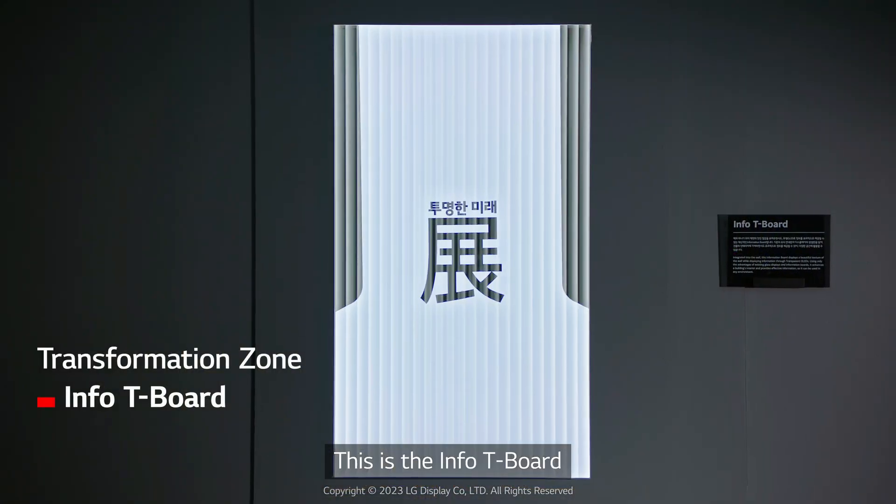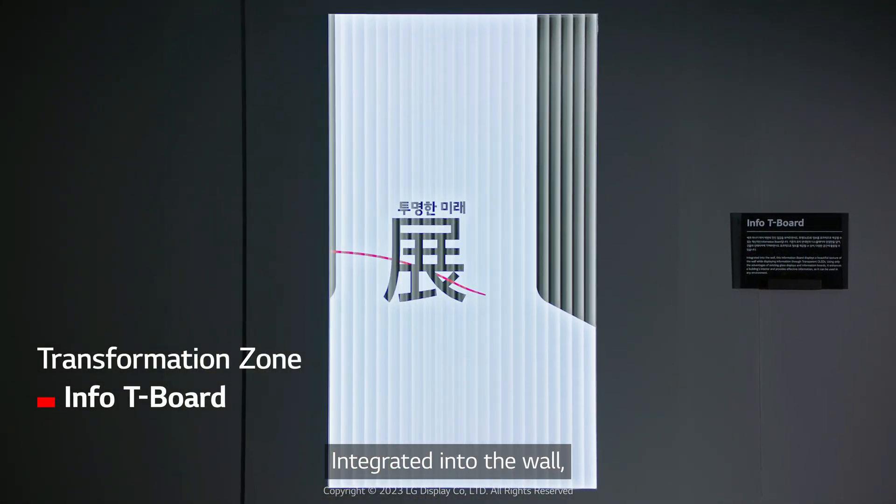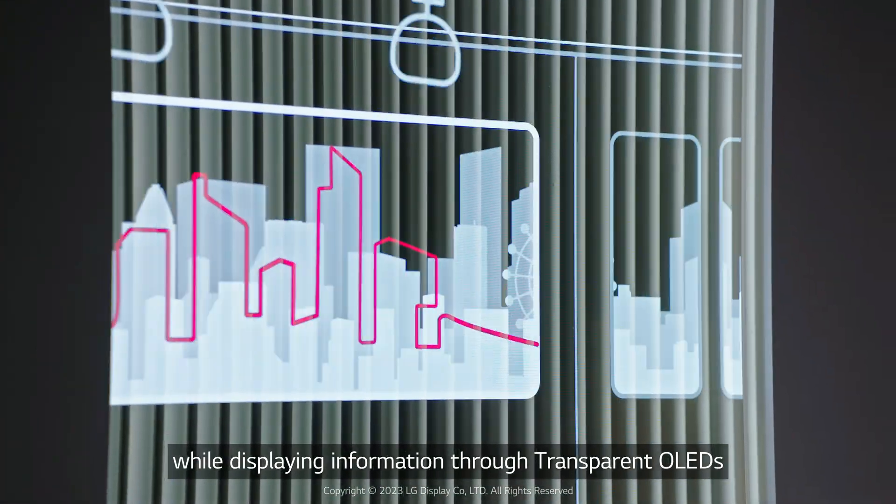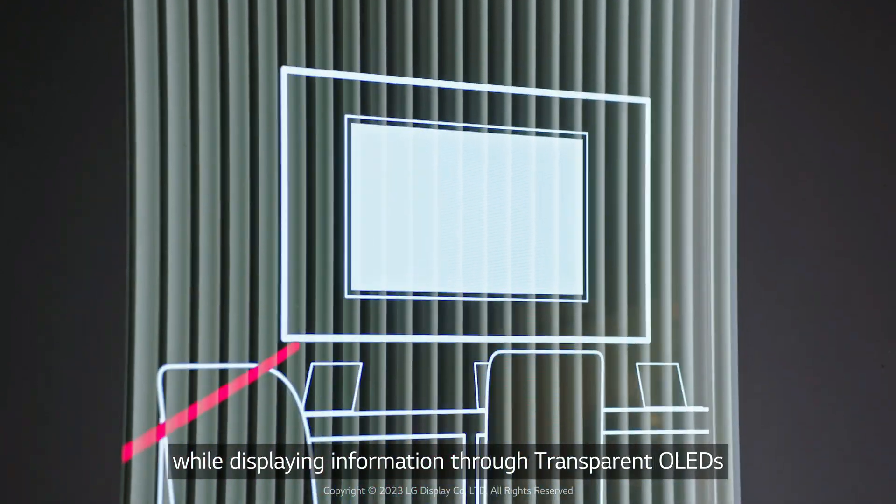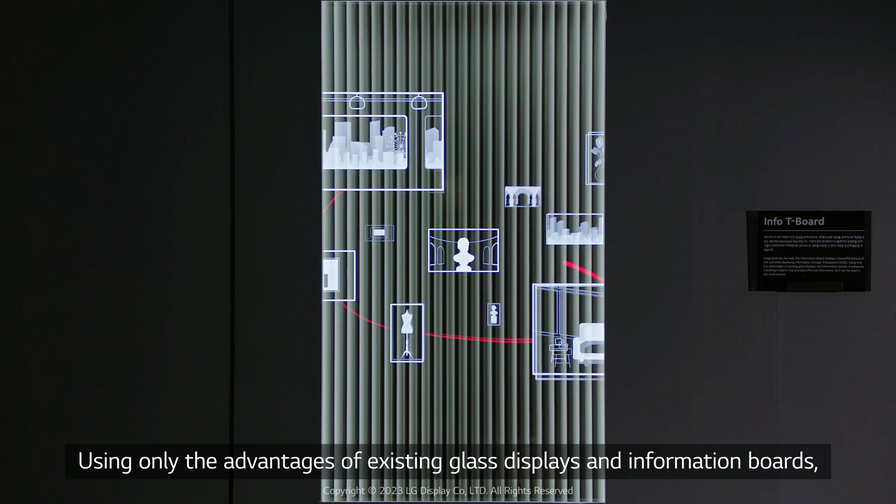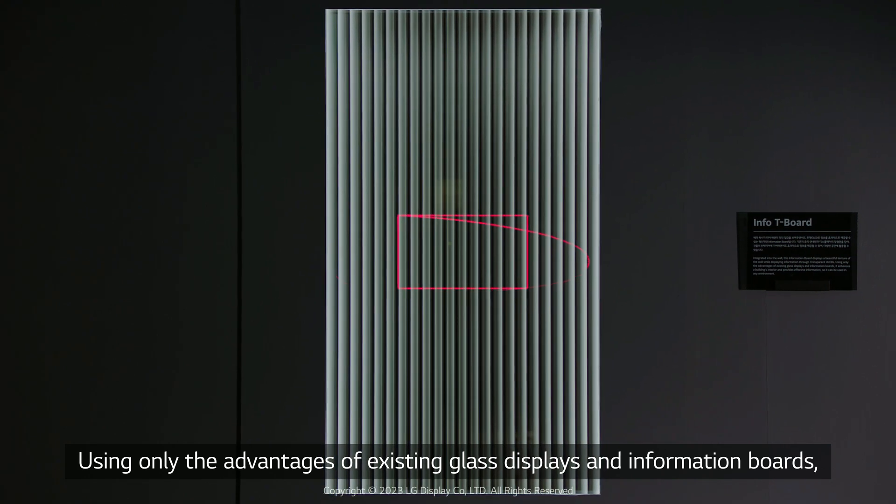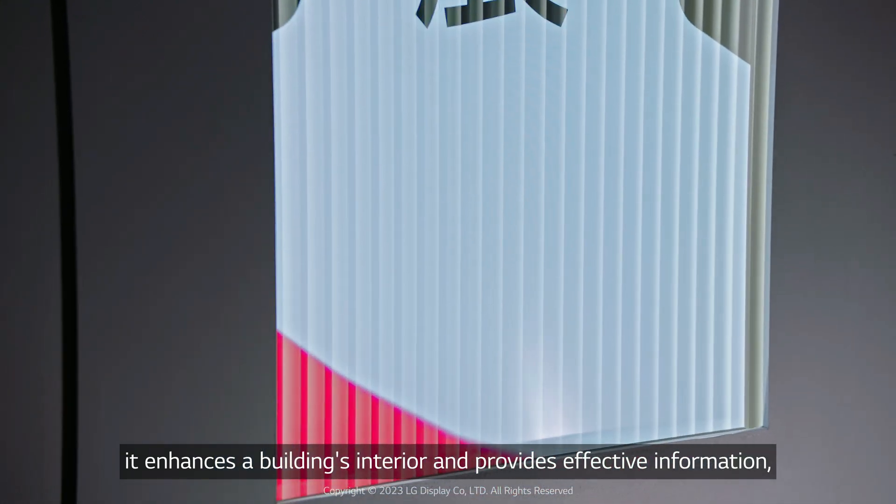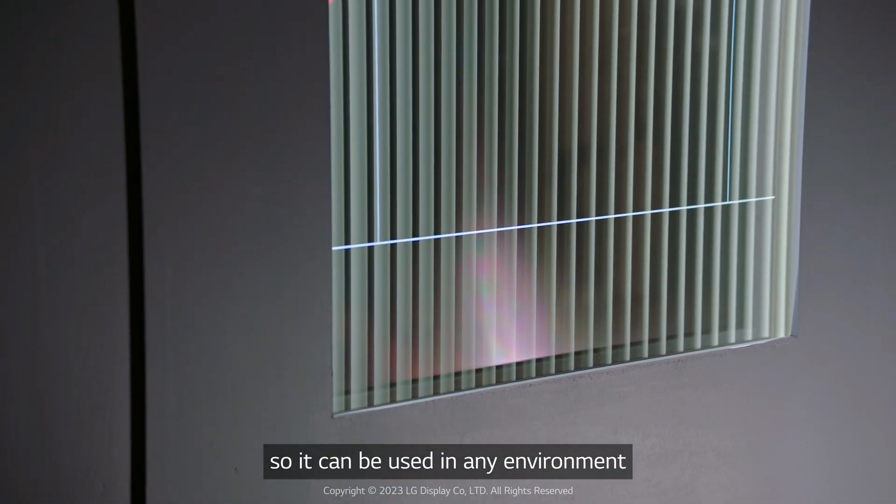This is the Info T-Board. Integrated into the wall, this information board displays a beautiful texture of the wall while displaying information through transparent OLEDs. Using only the advantages of existing glass displays and information boards, it enhances a building's interior and provides effective information so it can be used in any environment.